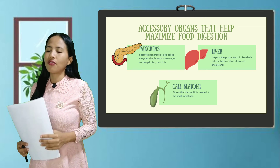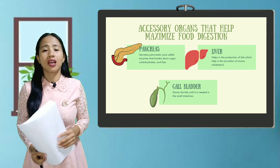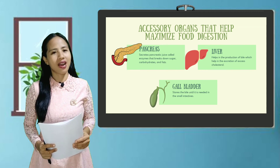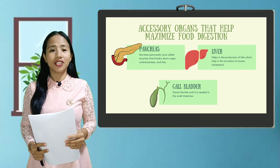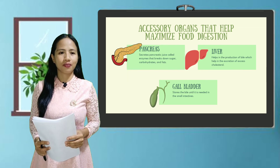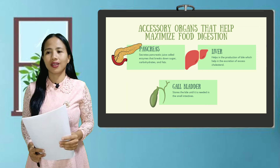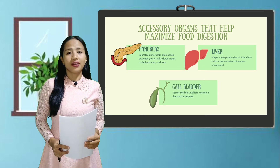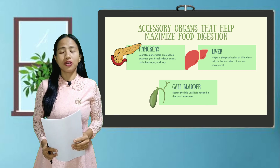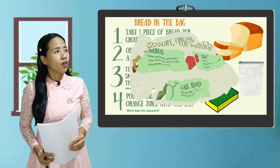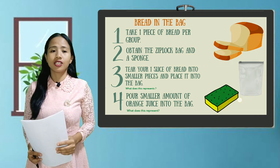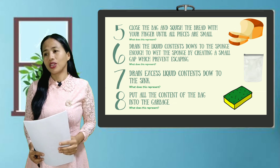Now let's see if you have really internalized our topic today. The organs of the digestive system are: mouth, esophagus, stomach, small intestine, large intestine, rectum, and anus. Very good. To further understand the lesson, let's do some demonstration. I want you to group yourselves into two. We call this activity 'Bread in the Bag.' I'll give you 10 minutes to perform the activity and to answer the questions given.